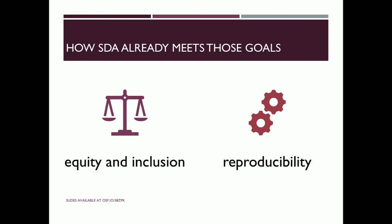Secondary data analysis is already meeting some of the goals of open science — specifically equity and inclusion and reproducibility. In terms of equity and inclusion, publicly available data sets mean you don't have to have a large grant to do good quality research, and you don't have to wait decades — as a health psychologist interested in longevity, I can start answering those questions right now with some of these data sets. It also expands equity and inclusion to researchers at teaching colleges, or students in fields without the same resources, who can still do rigorous, robust, meaningful research because we've put these data sets online.